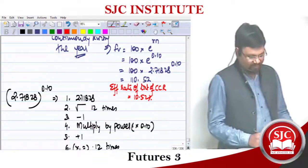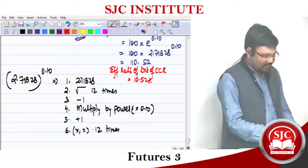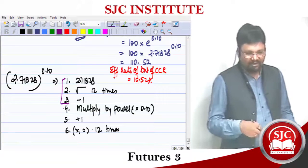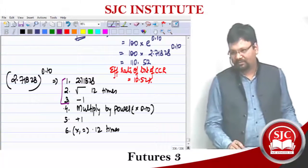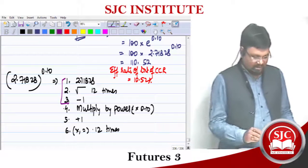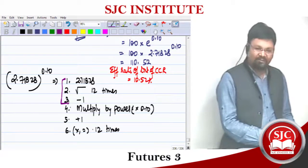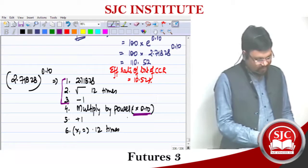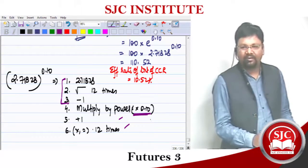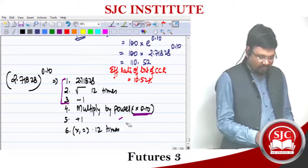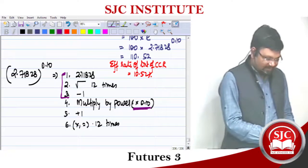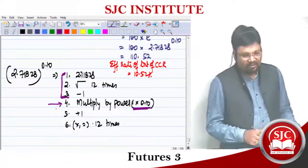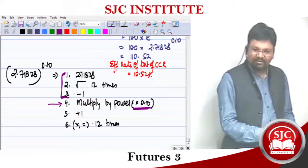Now, whenever you are doing continuous compounding calculations, you may find the three-step process a bit monotonous — doing it again and again. The value of e is a constant: 2.71828. It is not going to change in any sum. So in every sum, the first three steps are the same monotonous steps; only the power value changes.